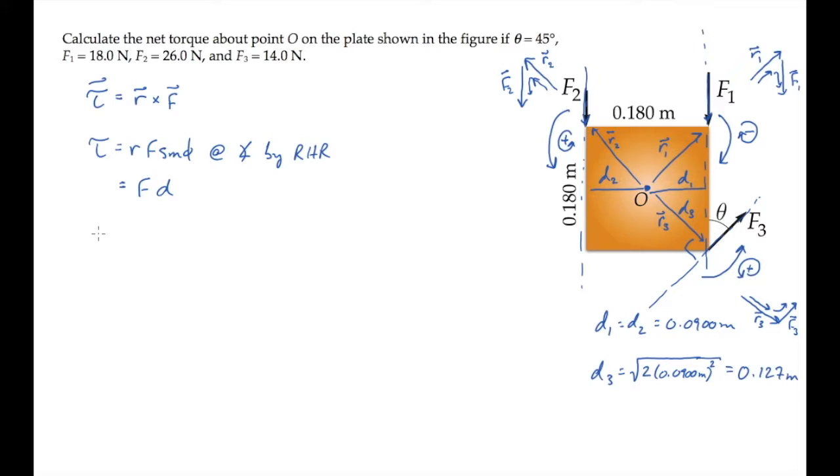So now we know the signs for each of these torques, and we can add up all the torques about point O, letting torques coming out of the screen be positive. The first torque is negative, with a magnitude of the force times the moment arm, D1. The second torque is positive, magnitude of force 2,